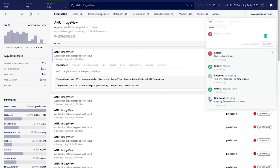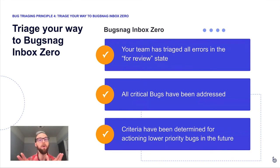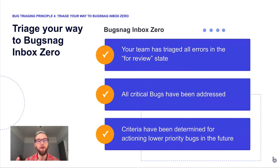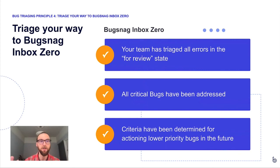Once you've determined the next step, you'd use the error actions at the top — create an issue, mark as fixed, snooze, or ignore. If you've shipped a fix and don't expect to see it in a future version, you'd mark it as fixed, add a comment explaining why — such as 'fixed in last release' — and confirm. You can then see it's marked as fixed, and the comment and activity view shows the fix note. Your goal is to get that 'For Review' count down to zero regularly.